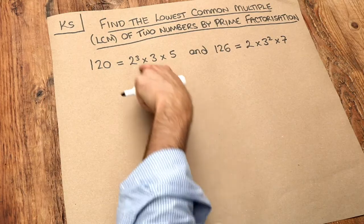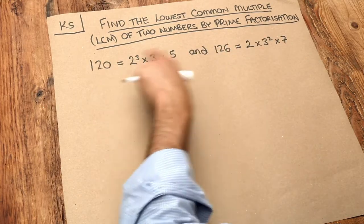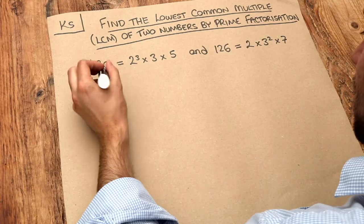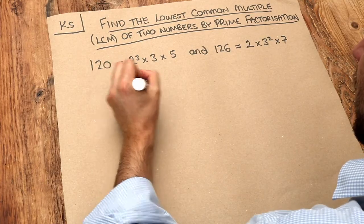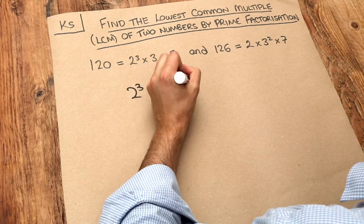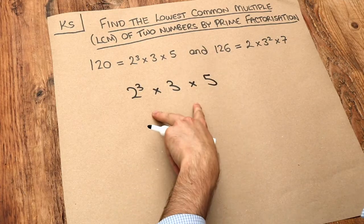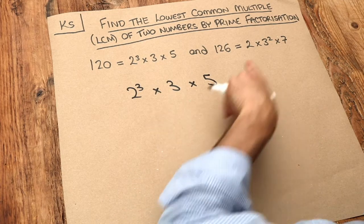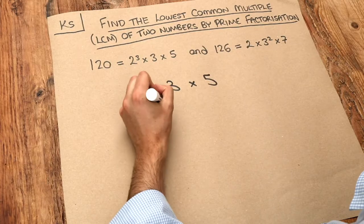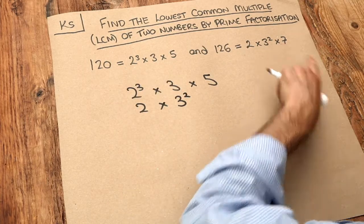And what we do now is write these prime factorizations of the two numbers we want to find the LCM of side by side. So we've got the 2 to the 3 times 3 times 5, and then the other one I'm going to list just below. We've got the 2 times 3 squared and then we've also got this 7.